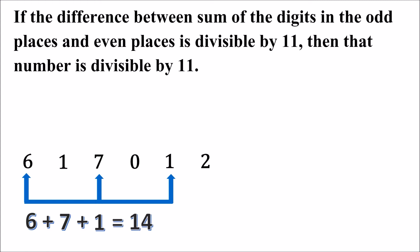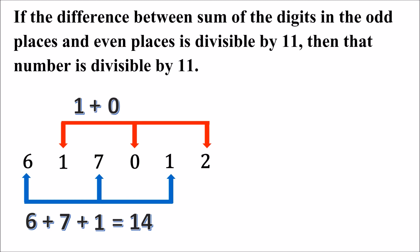Now we will find out the digits at the even places. The digits at the even places are 1, 0 and 2. Seen from the left hand side, 1 is at the second place, 0 is at the fourth place, and 2 is at the sixth place. We will add 1 plus 0 plus 2 and we get 3.